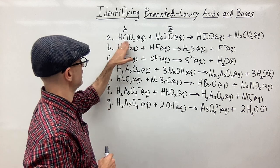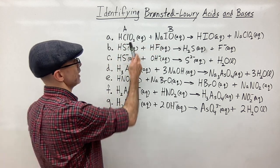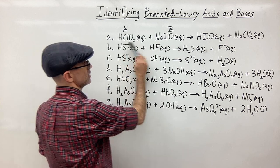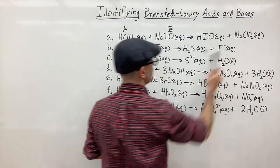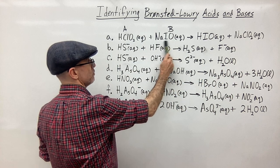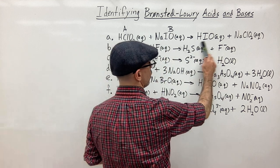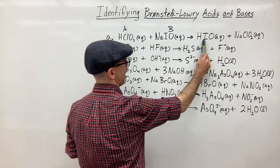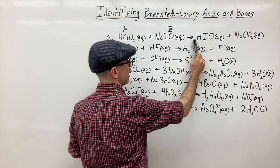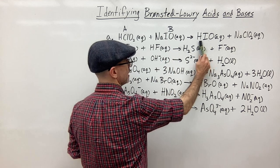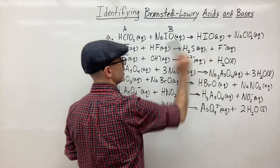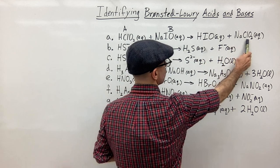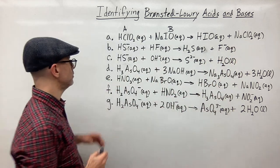So that's the acid and the base. We can also identify the conjugates. The conjugate base is the ClO₂⁻, and the conjugate acid of the base would be HIO — because they differ by a hydrogen. This gained a hydrogen, so that's the conjugate acid, and the other is the conjugate base.